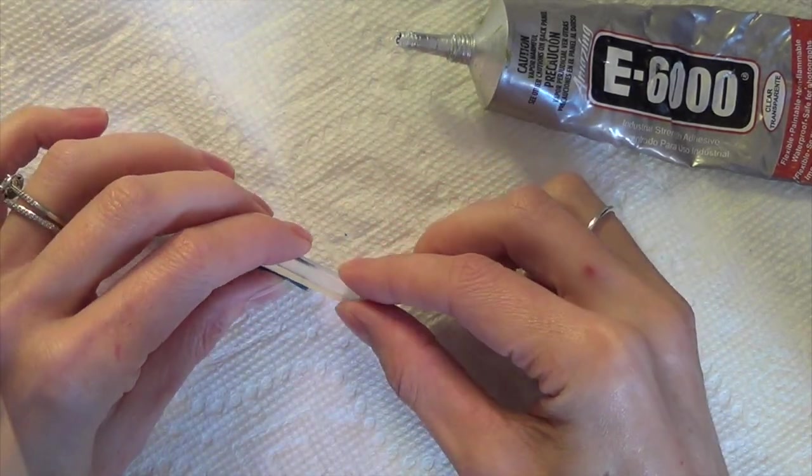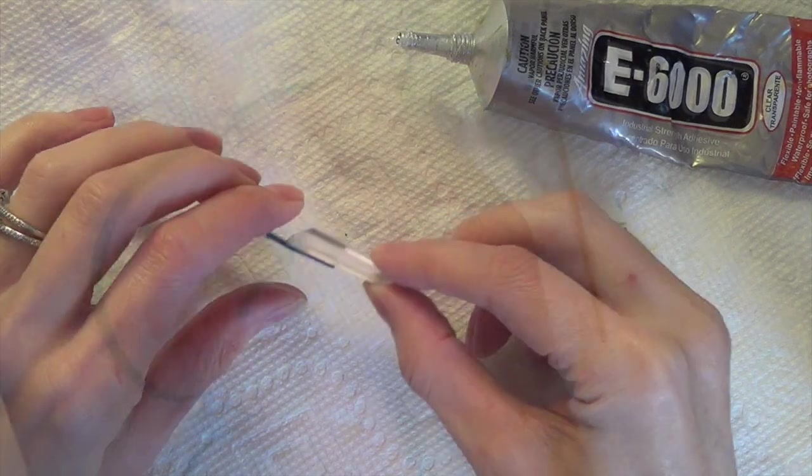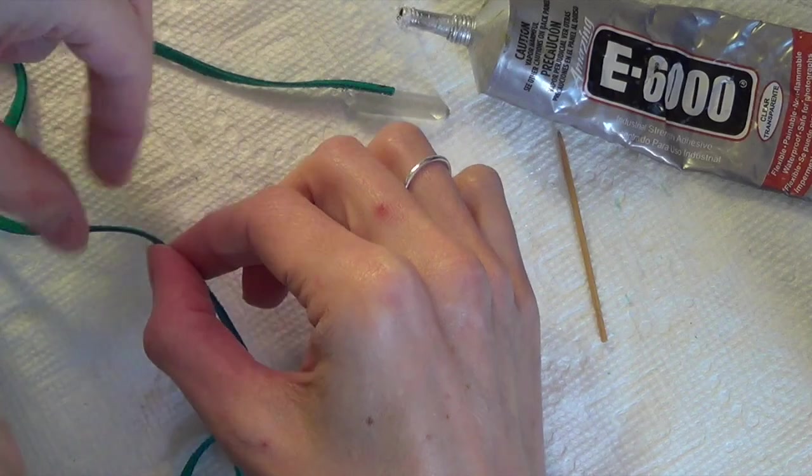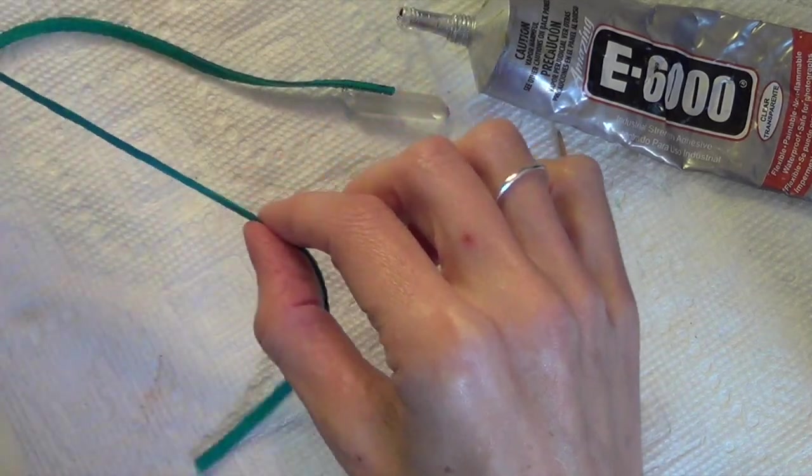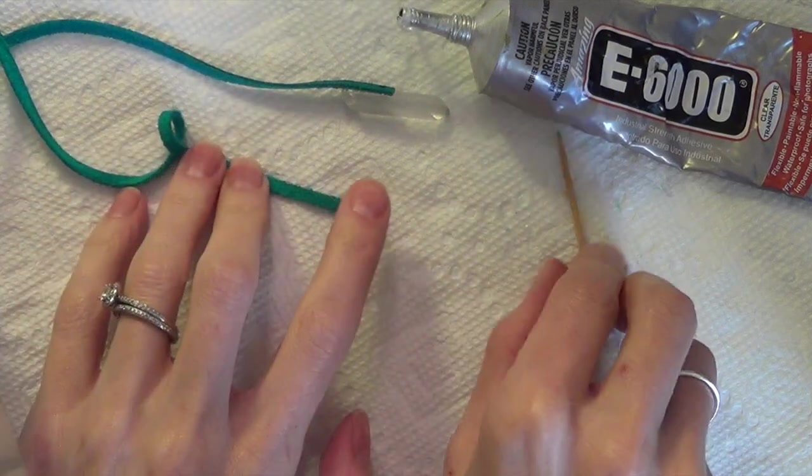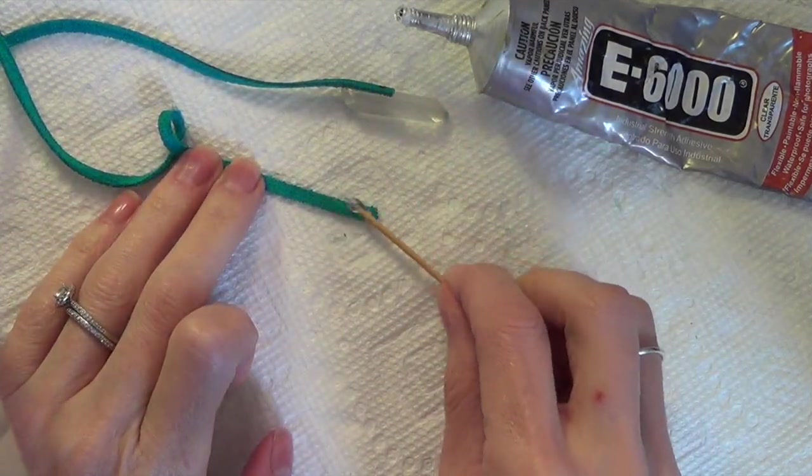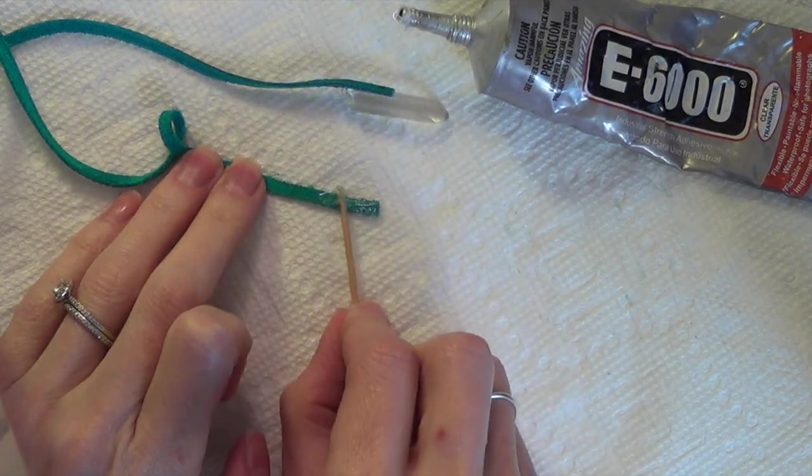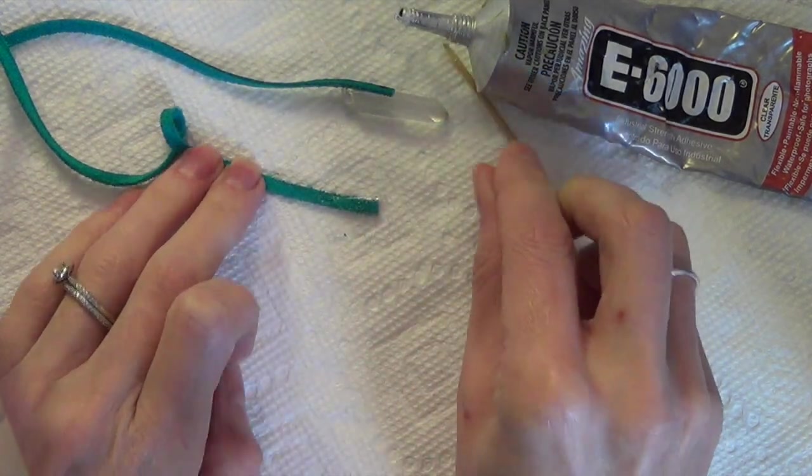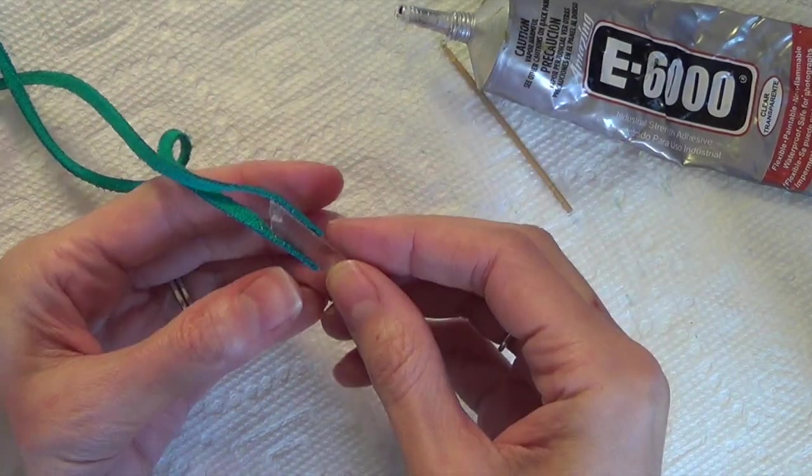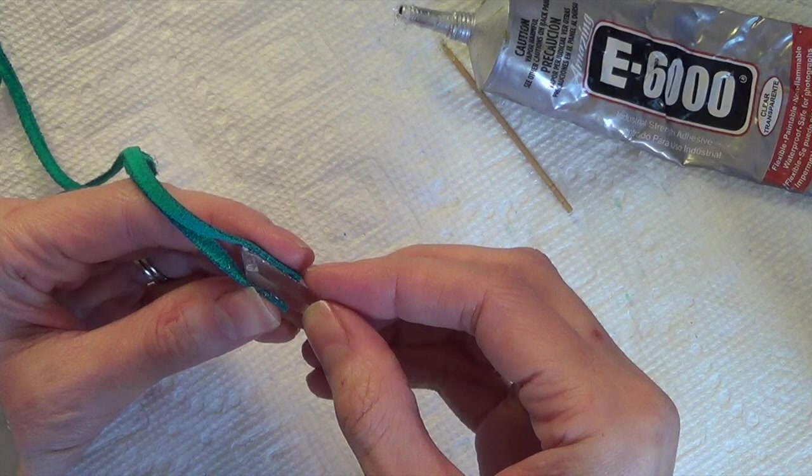You're going to stick it to one of the sides of the crystal. Then we are going to attach the other end. Before you glue it down, you want to make sure that your leather is not twisted, since this necklace is all in one piece. I will have another option for you if you'd like to make a shorter necklace using a clasp—I'll link to that tutorial at the end of the video or in the description.